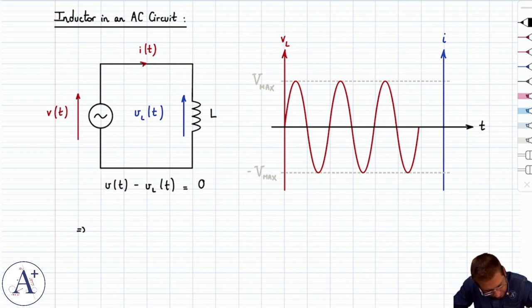Which leads to, of course, VL(t) equals V(t). Not very surprising because you've connected the inductor across your AC generator. V(t) could be anything, but remember that we said in this chapter we would be consistent and always choose Vmax sin(ωt).